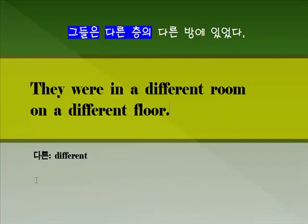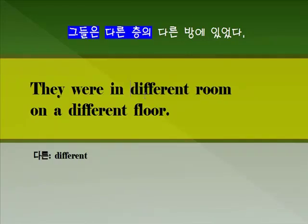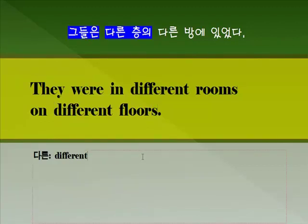그들은 다른 층의 다른 방에 있었다. 잘못된 부분이 있습니다. 어떤 부분이 잘못됐는지 여러분들이 찾아보세요. 그들은 서로 다른 각각의 층에 있었던 겁니다. 그리고 서로 다른 방에 있었던 겁니다. 그렇다면 단수가 아니라 복수를 써줘야 되겠죠? 단수를 쓰게 되면 같은 방에 있다는 얘기니까 서로 모순이 됩니다. 그래서 부정관사를 빼고 'rooms', 마찬가지로 부정관사를 빼고 'different floors', 이렇게 해야 올바른 표현이 됩니다.